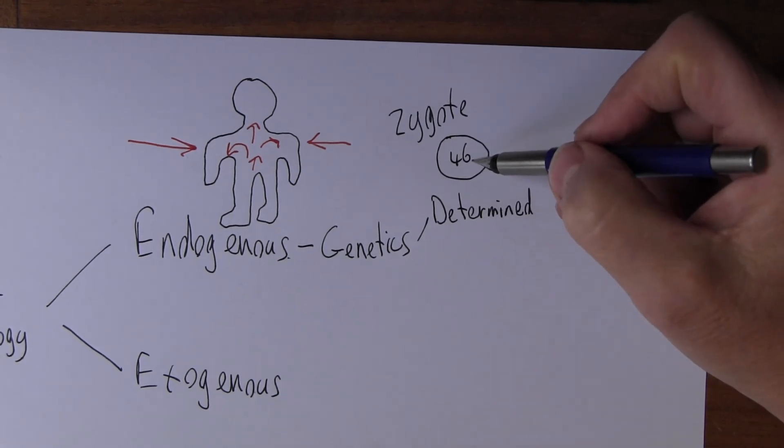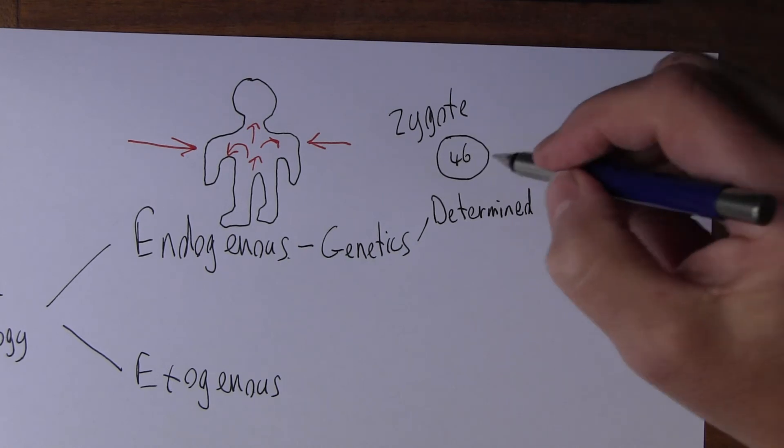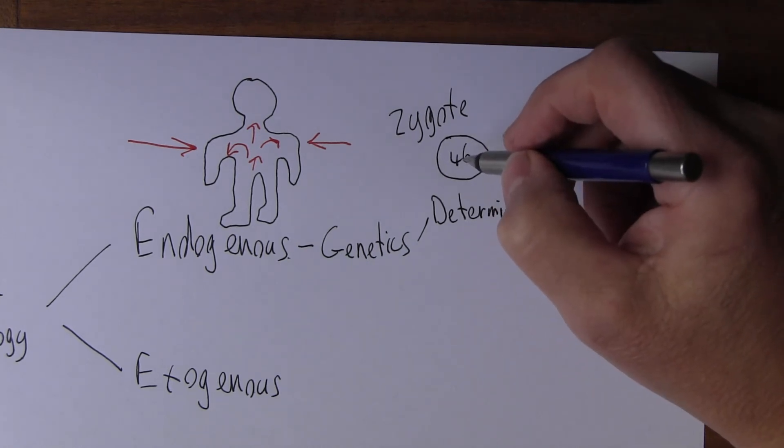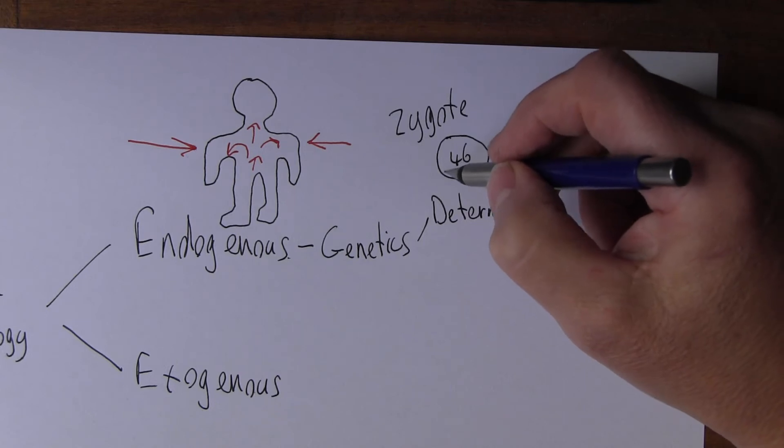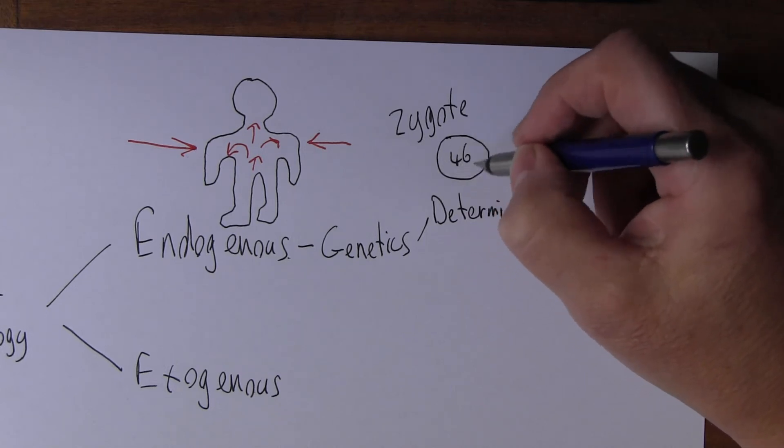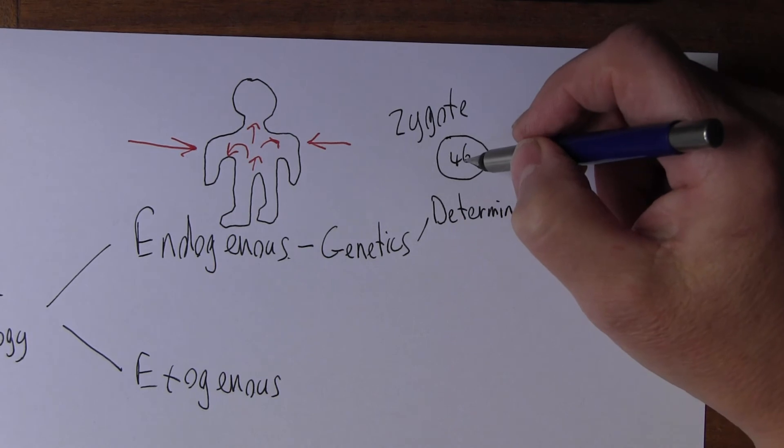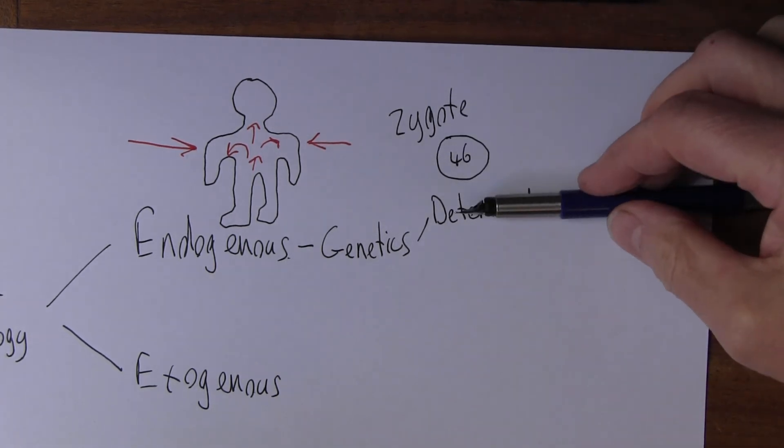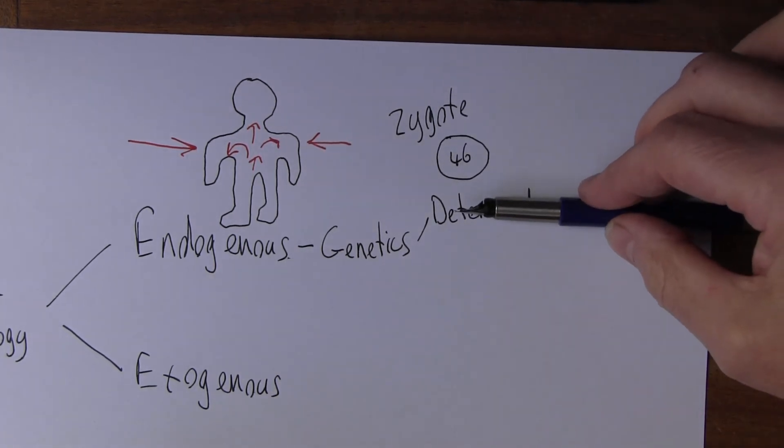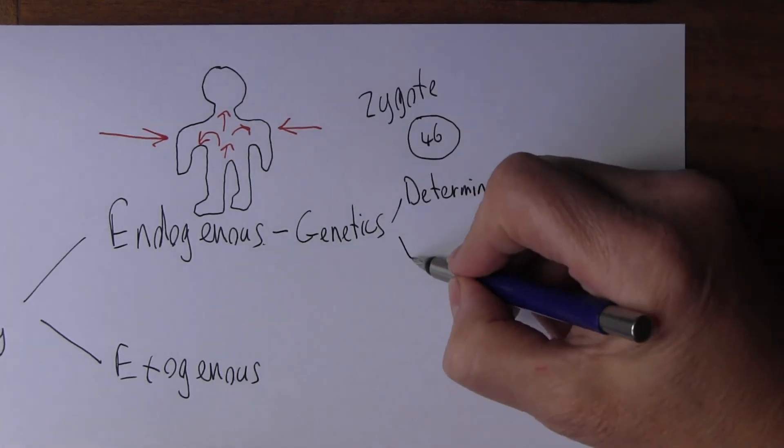When one sperm fertilized one egg you became a zygote. When you were very young, nine months before you were born, that's how you started off. When the one sperm and the one egg were fertilized, that gave you a genome or a set of genetic material, and it used to be believed that that was determined, that that couldn't be changed.